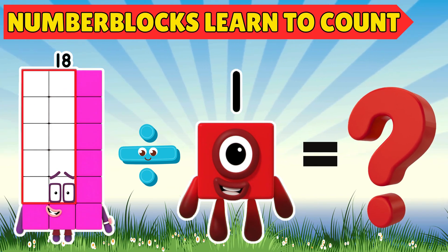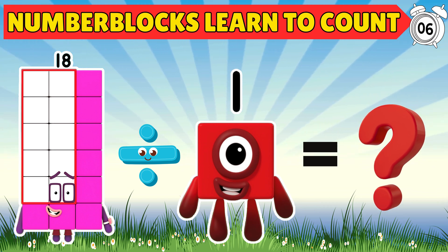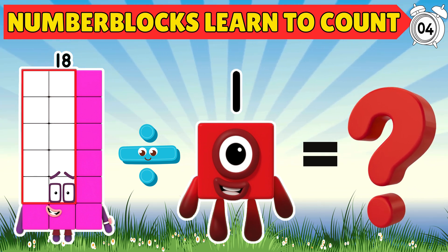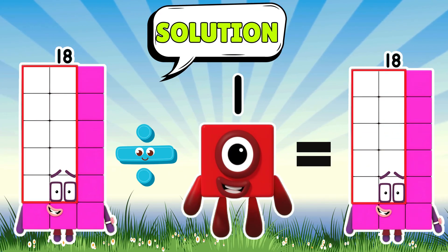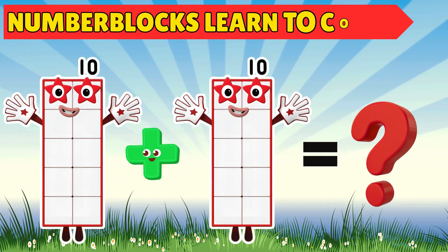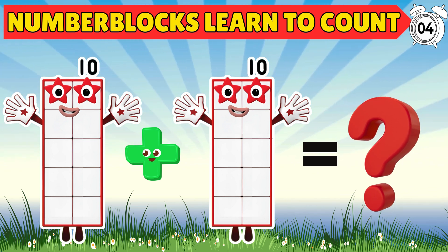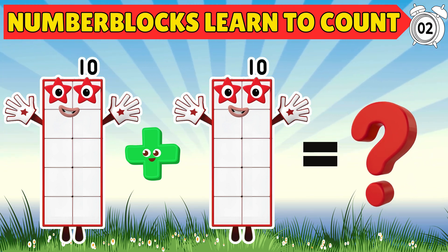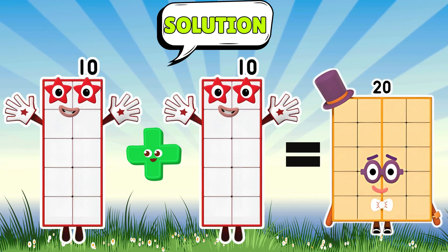Let's divide with the Number Blocks. What's eighteen divided by one? The answer is eighteen — great job solving that with the Number Blocks. It's an addition adventure: what's ten plus ten equals? You got it — ten plus ten equals twenty. Awesome!